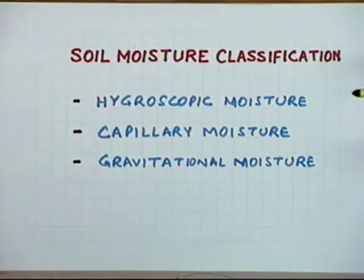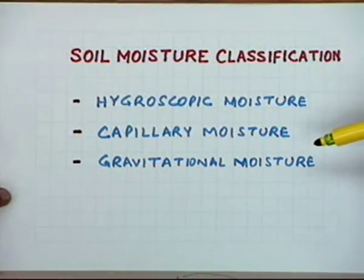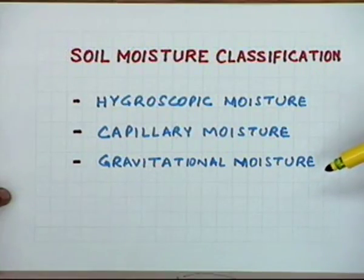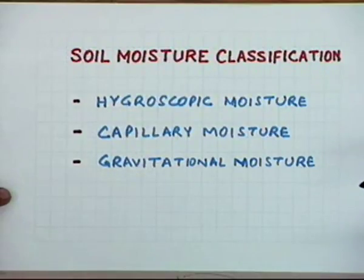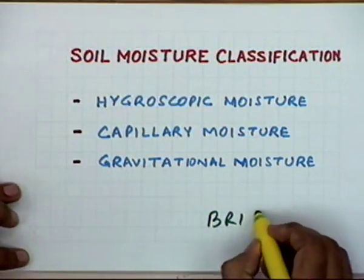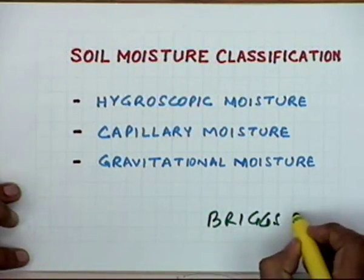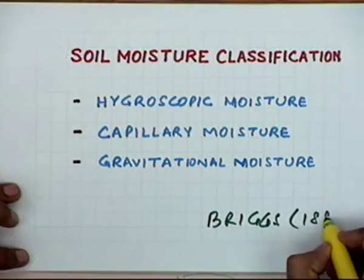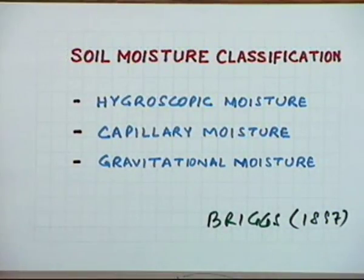The soil moisture available in the soil is available in the form of hygroscopic moisture, capillary moisture, and gravitational moisture. This is one broad classification which was given by Briggs as early as 1897.